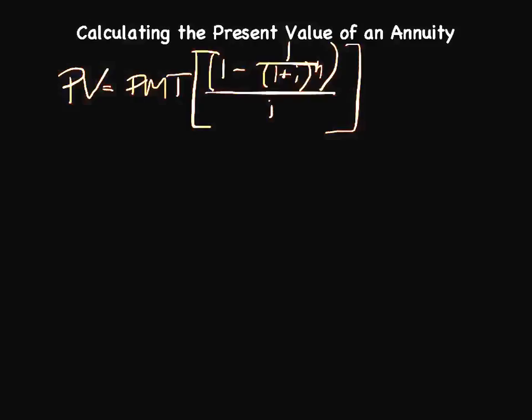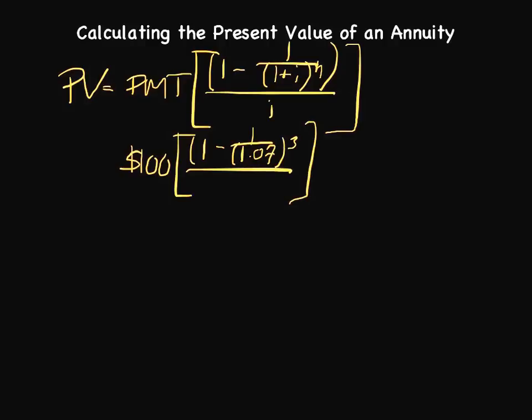Let's go ahead and simply plug in the existing information. We know the payment is going to be $100, so we can plug that in. We have one minus one divided by 1.07, since we know our interest rate is 7% to the third power, and divide that by 0.07 once again.